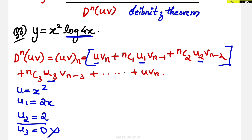Remember, always take u as a polynomial and differentiate until you get zero. At the step where you get zero, you stop. That is where the answer of that particular expression using Leibniz theorem terminates.